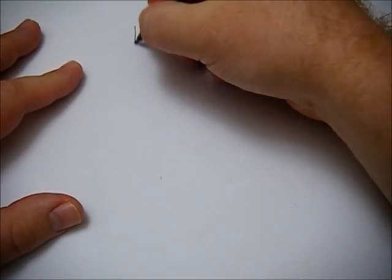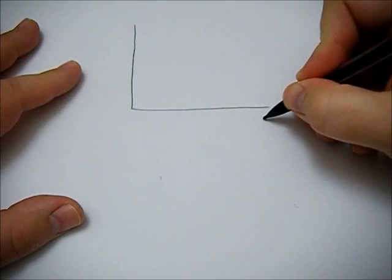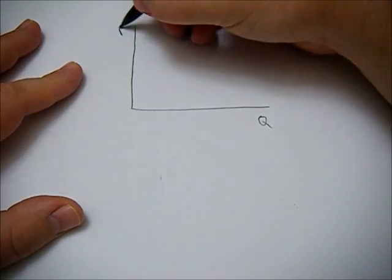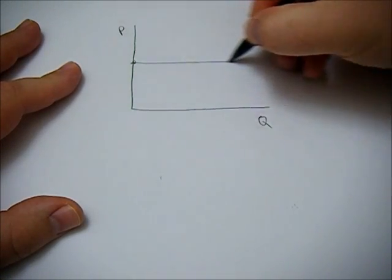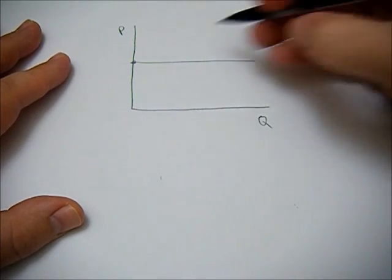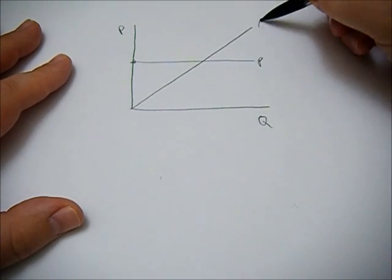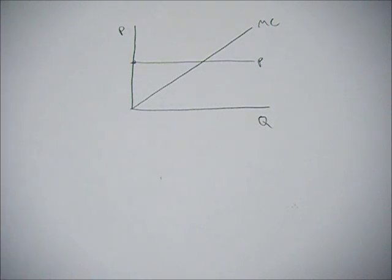Now let's look at a perfectly competitive firm, for example. So here, we'll have quantity and price. And we know that in perfect competition, price is horizontal. But our marginal cost is upward sloping.